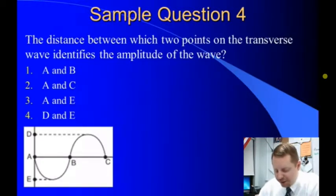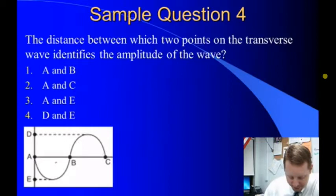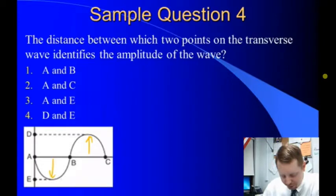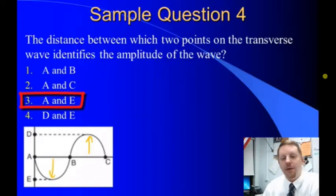Question 4. The distance between which two points on the transverse wave identifies the amplitude of the wave? Well, if you'll recall, the amplitude of the wave is a distance from the baseline to a crest or the baseline to a trough. So are choices between A and B? No, that doesn't work. Those are on the baseline. Between A and C, those are also on the baseline. A and E, there's the distance between a baseline and a trough. So that should work. There's our amplitude. And choice 4, D and E, well, that's from a crest to a trough. So that would be two times the amplitude. That can't be the answer. The correct answer must be 3, A and E.